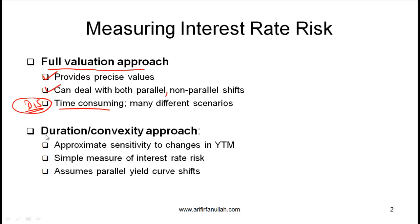The other major approach is called the duration/convexity approach. This method provides a nice approximation — in other words, it gives us approximate sensitivity of bond values to changes in yield to maturity. It is a simple measure of interest rate risk. In terms of disadvantages, this method assumes parallel shifts in the yield curve, so if we have a non-parallel shift in the yield curve then that's a bit of an issue for this method.